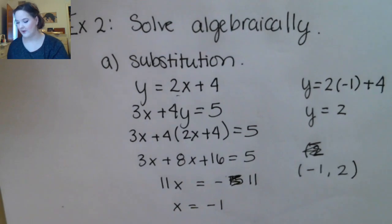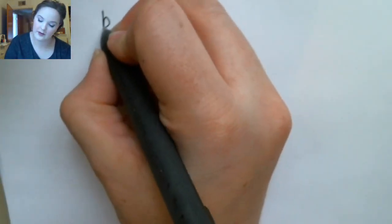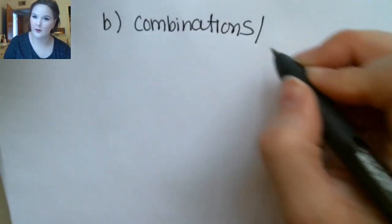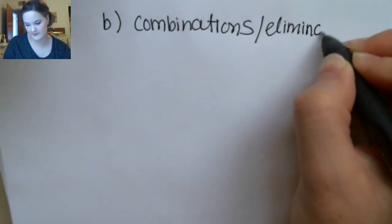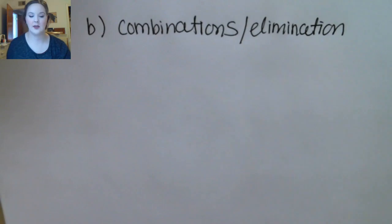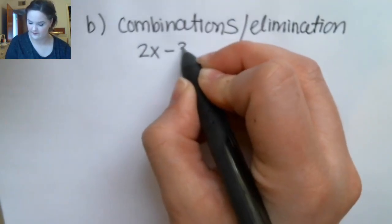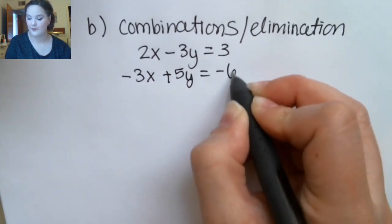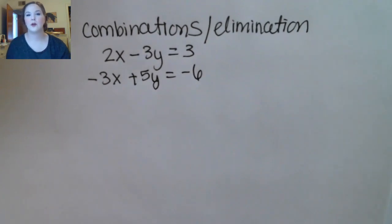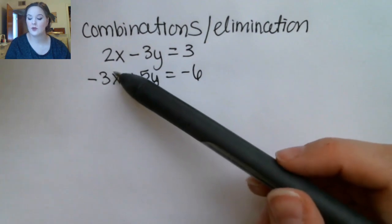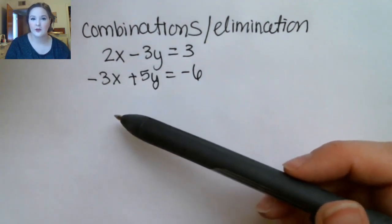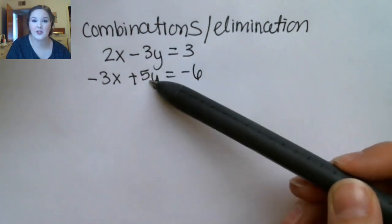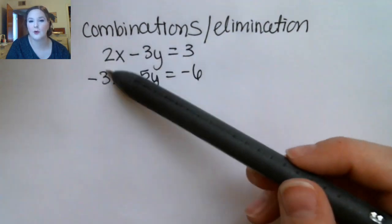The second method to solve algebraically is either called combination or elimination — both of these terms refer to the same method. In this method, you want to make one of the variables have opposite coefficients so that when you add them together they'll cancel out. For example, you would want the coefficients of x to be 6 and negative 6, or the coefficients of y to be 15 and negative 15. You're going to choose the least common multiple of these two numbers.